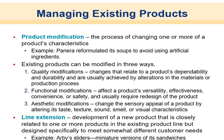Moving on to line extension — development of a new product closely related to one or more products in the existing product line, but designed to meet somewhat different customer needs. Examples: Arby's came out with sliders and miniature versions of its sandwiches; Chick-fil-A added the spicy chicken sandwich; McDonald's offered breakfast all day. Basically taking what you already produce and finding a new way of doing it.